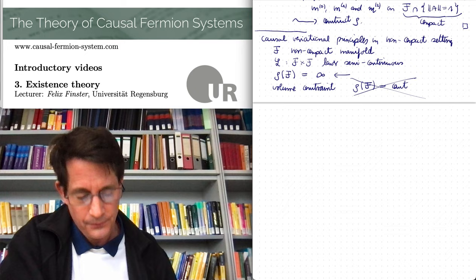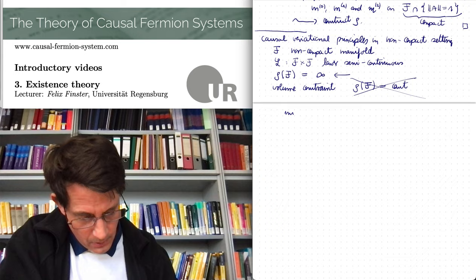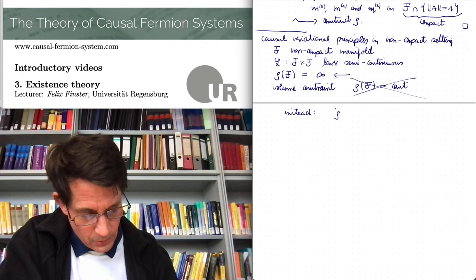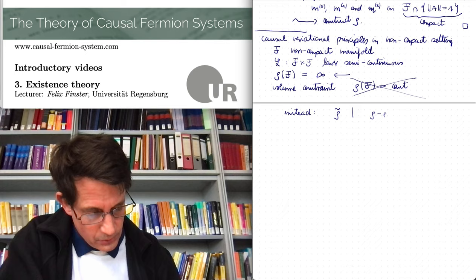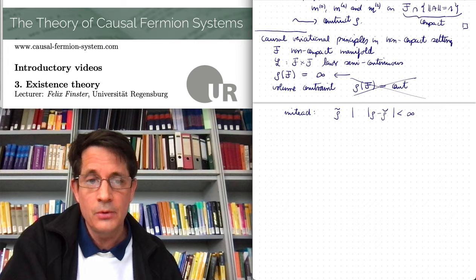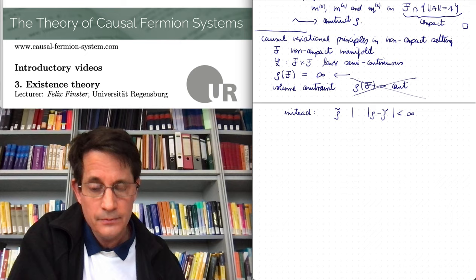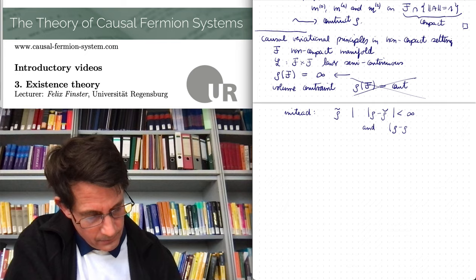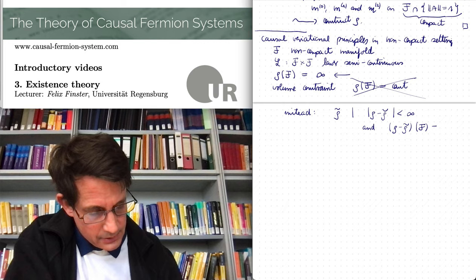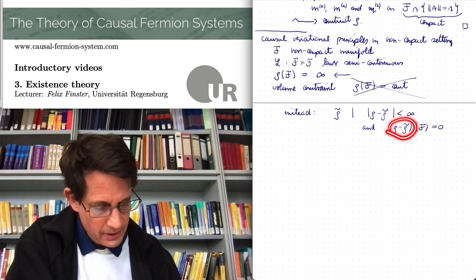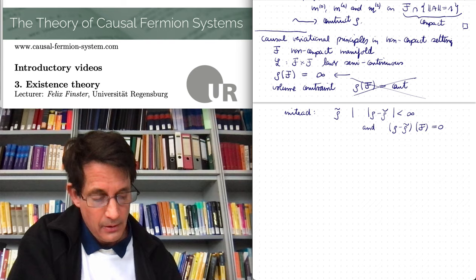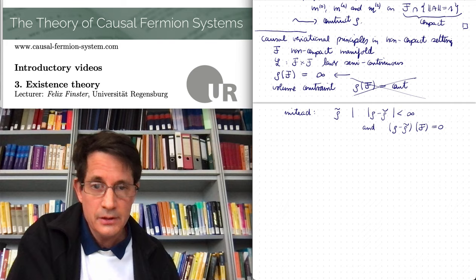But one has to formulate it in a somewhat different way. And the way to do it is that one considers other measures, rho tilde, with the property that rho minus rho tilde has finite total variation. So in other words, the two measures coincide except on a set of finite volume. And then I can also say what it means that the total volume is the same. Namely that the volume of rho minus rho tilde is equal to zero. Maybe I should point out, for clarification, so this rho minus rho tilde is a signed measure. So it's no longer positive. But it has finite total volume. So this is how one can formulate the volume constraint.